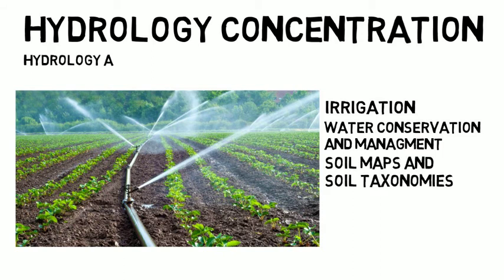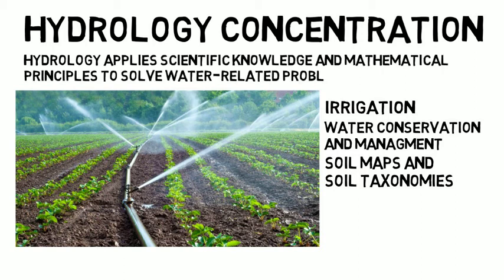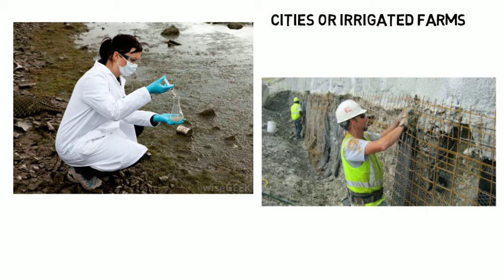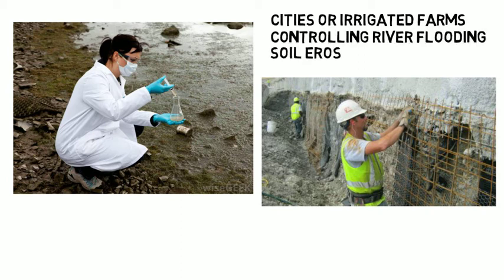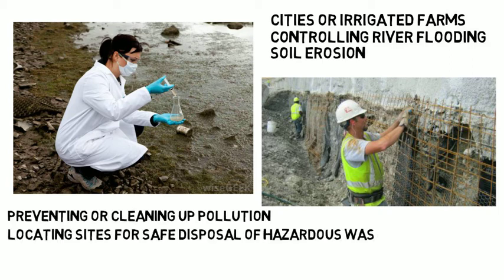Hydrology applies scientific knowledge and mathematical principles to solve water-related problems in society — problems of quantity, quality, and availability. Hydrology is not only of interest to earth scientists, but also to engineers and other professionals concerned with finding water supplies for cities or irrigated farms, controlling river flooding or soil erosion, or working in environmental protection, preventing or cleaning up pollution, or locating sites for safe disposal of hazardous wastes.